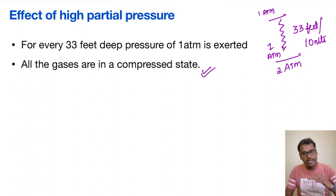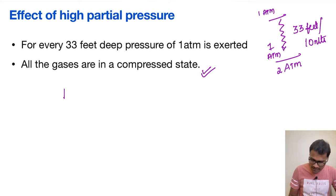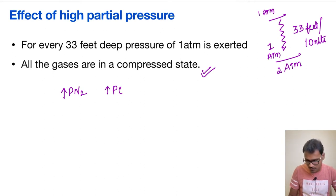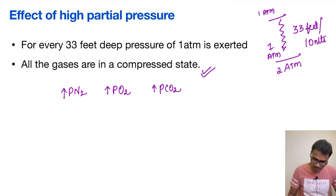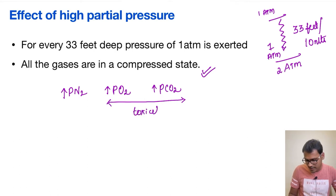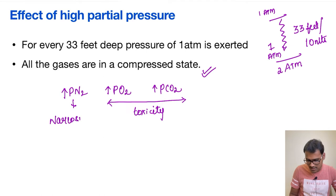All gases will be in a compressed state because of the increased pressure. From Boyle's Law, volume is inversely proportional to pressure — as pressure increases, the volume of gases is compressed. This causes deleterious effects through an increase in partial pressure of nitrogen (the most abundant gas), partial pressure of oxygen, and partial pressure of carbon dioxide. Both O2 and CO2 cause toxicity, and N2 causes narcosis.